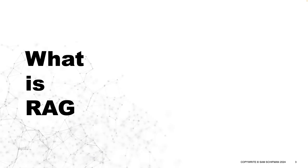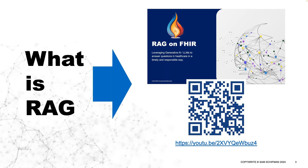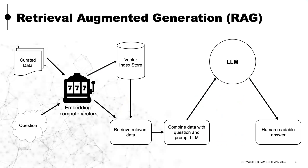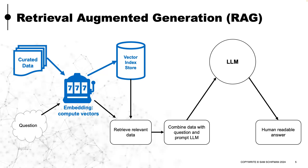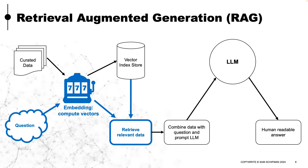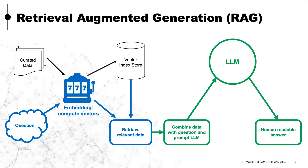In my last video, I talked about retrieval augmented generation, or RAG. You can go check out that video where I go in-depth into what it is and how it works. But for our purposes here, let's quickly review. RAG is when we take some curated data, do what we call embedding or vectorizing, which is to create a numeric representation of it, and put it in some kind of vector store. Then we can take a question and create the same sort of numeric representation, which allows us to go to that vector store, get relevant curated data, combine it with the question, and give it to an LLM to get us an answer that's grounded in truth.